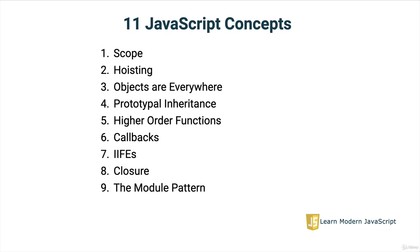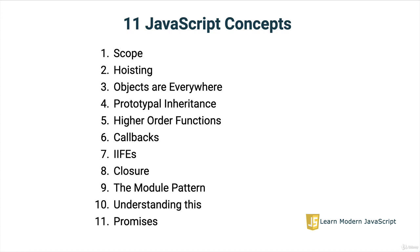Then we'll deal with the module pattern — a pattern you'll see throughout JavaScript that is important to understand. We then need to talk about `this`, which can be a little bit difficult to understand when working with objects. And for the 11th topic, we will deal with promises, a very important asynchronous pattern in JavaScript. So those are the 11 topics — let's go ahead and get started.